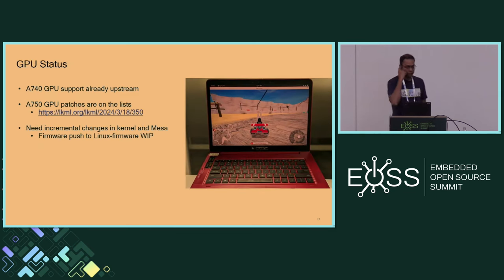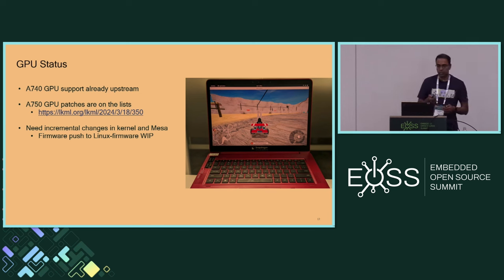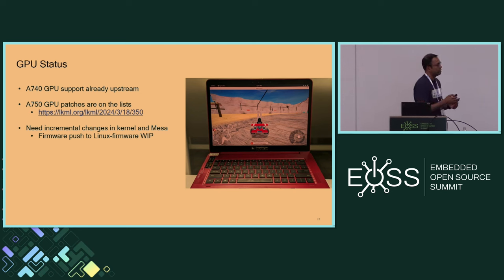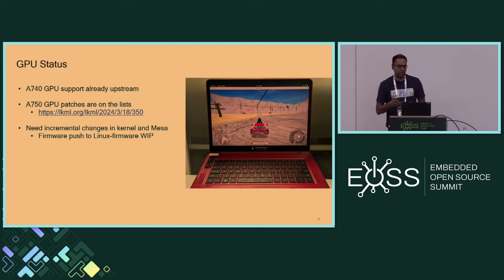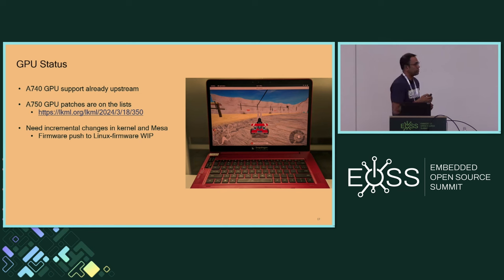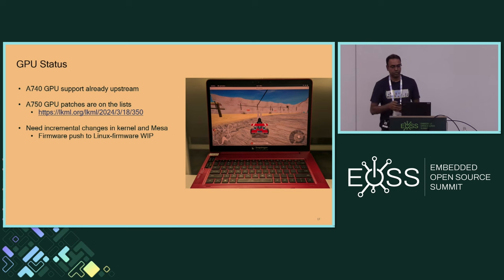In terms of GPU status, A740 is already merged and A750 patches are on the list — Neil has been pushing those to get them merged upstream. The GPU in this particular SOC is a slightly different variant, so there are incremental patches in our tree for now which are not posted yet, but we plan to get those posted and merged upstream for the kernel as well as Mesa. The firmware is not in linux-firmware yet, but that's something we're working on to get the necessary permissions to get the GPU firmware merged in linux-firmware.